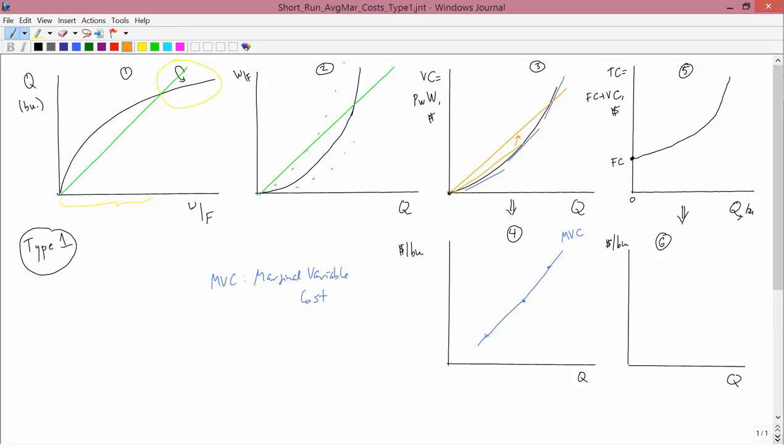Compared to the marginal, the orange lines are flatter. For example, at this point, the orange line is flatter than the blue line. The same is true here. Orange line is flatter than the corresponding blue line. And so average is going to have to be below marginal. So average variable cost is going to be below marginal variable cost.